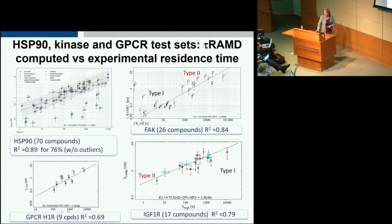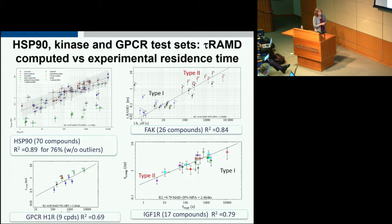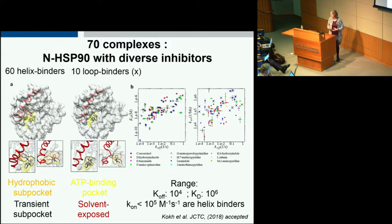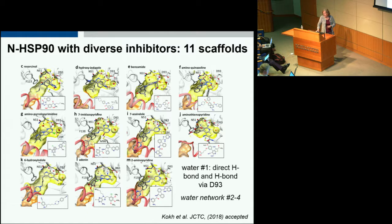We've been working on a number of different systems — kinases with type 1 and type 2 inhibitors, and GPCRs — and we get correlation between computed and experimental residence times. For the HSP90 case, we had a large dataset of 70 complexes consisting of helix binders and loop binders: very diverse inhibitors occupying both the ATP binding site and the hydrophobic pocket under the helix, with a wide range of kinetic parameters across 11 different scaffolds.